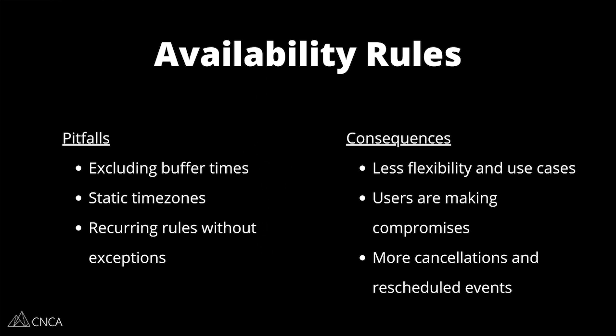If you exclude buffer times between appointments, you run the risk of back-to-back meetings with no breathing room for breaks or meetings that might go a little long. If you're not indicating time zones for multi-location meetings, you end up with people showing up at the wrong time. And while it would be easy to set up the same availability for every day or week, that's just not the reality of how most people's schedules go. You have to allow for time off, vacations, special events, and other one-off changes so that availability is accurate. Without incorporating these important pieces of logic, you greatly risk having an app that's less flexible, forcing users to make compromises and leading to more cancellations and rescheduled events, which no one wants. These are the consequences that will ultimately drive users away from your app.